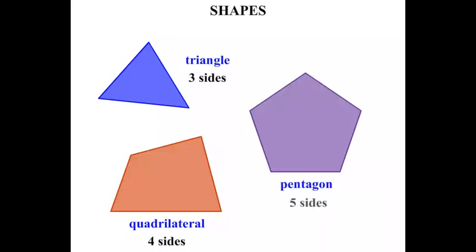A pentagon has five sides. The one we've drawn there is known as a regular pentagon where all the sides are equal.